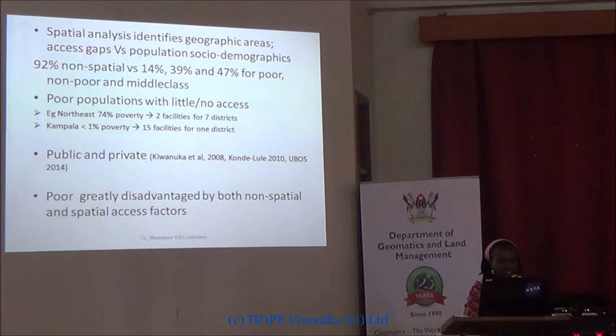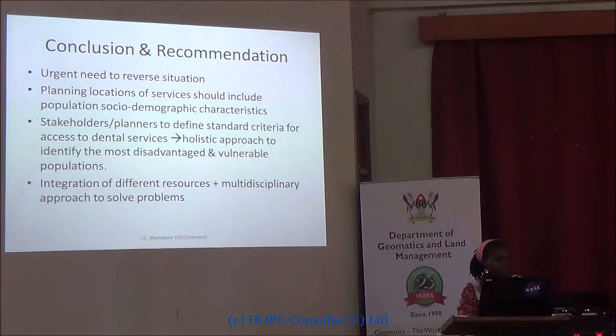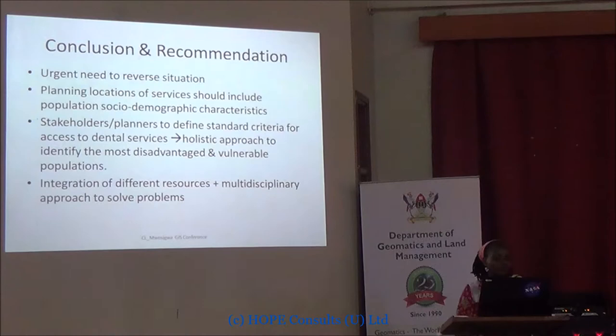This is unacceptable, and this study shows there is definitely a need to reverse the situation. Planning of locations and services should include social demographic factors — how many poor people do we have, how educated are they, is this a rural area — all things which GIS can do very well to explicitly show us. There is definitely a need for stakeholders and planners to define standard criteria to determine who has access and who does not, so that the most vulnerable populations can be identified.